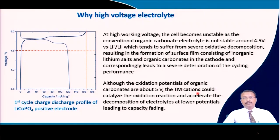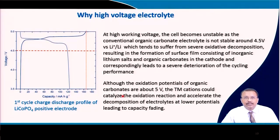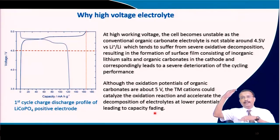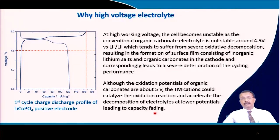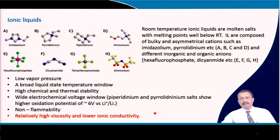The oxidation potential of organic carbonates is about 5 V. However, transition metal cations in the cathode catalyze this oxidation reaction and accelerate electrolyte decomposition at relatively lower potentials. So even if the HOMO-LUMO gap is theoretically large enough for stability up to 5 V, most cathode materials contain transition metal cations that act as catalysts and cause premature decomposition.